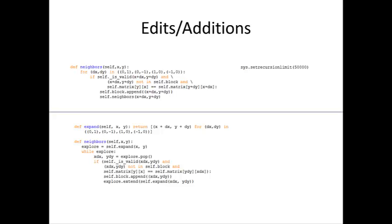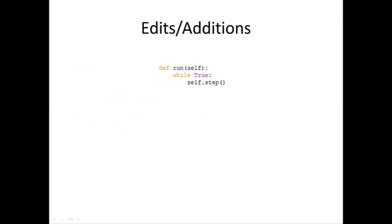Another option is using the code on the bottom. This code has been translated from the recursive function above to be a non-recursive version. If we choose to use this function, we do not need to increase the recursion limit. The final piece of code that was added to the original PEAT interpreter is the run function. This function contains a while loop that keeps calling the step function. A step function is given in the original program, but this run function is required to step through each piece of the program.